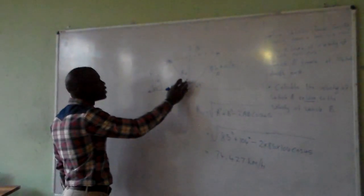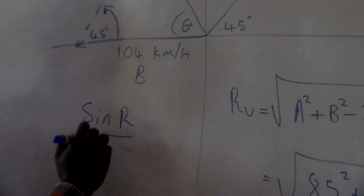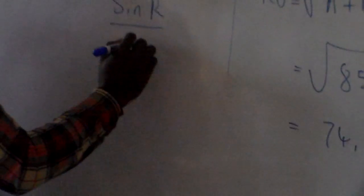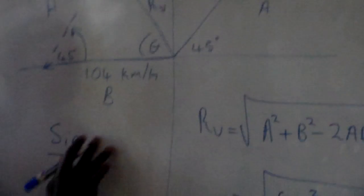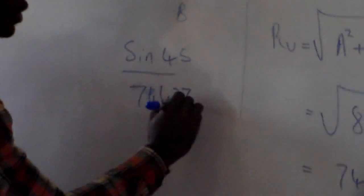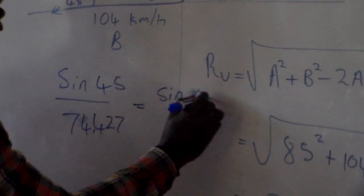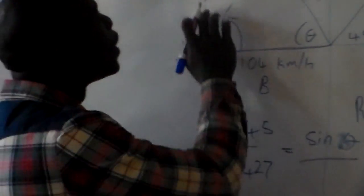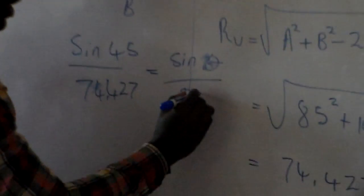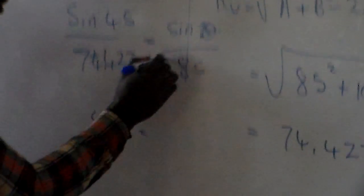To find the angle, we set up the sine rule as: sine of the resultant angle over R equals sine 45 over R, where R is 74.427. We are solving for angle theta, so: sine theta over A equals sine 45 over 74.427, where A is 85. Cross-multiplying gives sine theta equals 85 times sine 45, divided by 74.427.